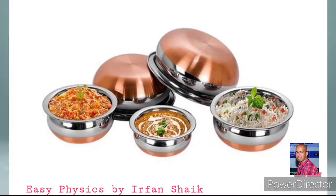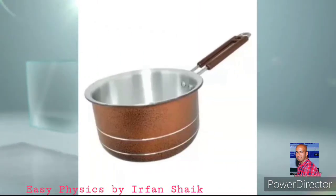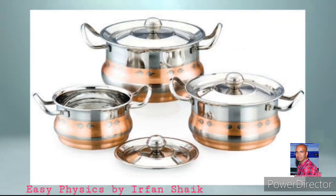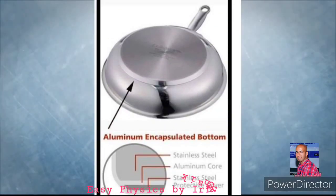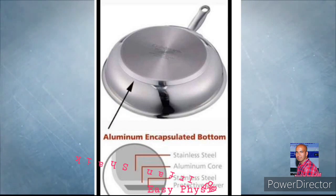Did you observe the cookware in our kitchens? They are coated with copper and aluminum at the bottom. As copper and aluminum have very low specific heat, they absorb heat energy very fast. So the food will be cooked in less time.